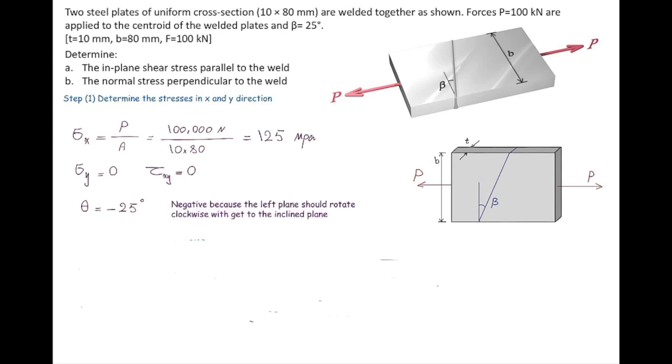Now let's plug in the values into stress transformation. Sigma n is sigma x plus sigma y over 2 plus sigma x minus sigma y over 2 cosine of 2 theta plus tau xy sine of 2 theta.